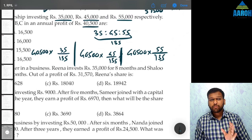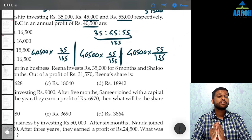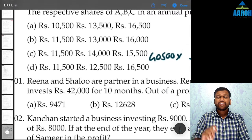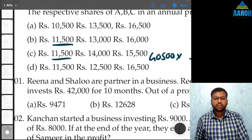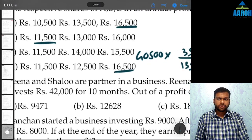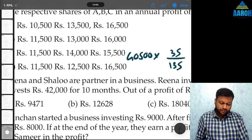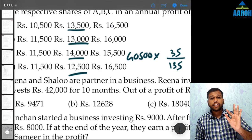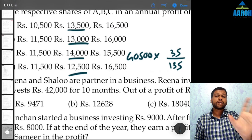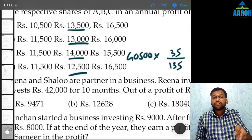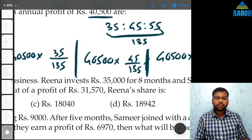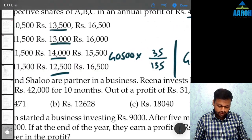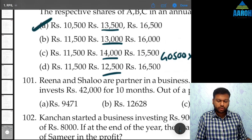From an exam point of view, there's a trick to get the answer fast. If you see the options, A's share is the same in two options and C's share is the same in two options, but B's values are all different. That means you only need to calculate B's share. B's share = 40,500 × 45 ÷ 135 = 13,500. Since 13,500 appears only in option A, option A is the correct answer.